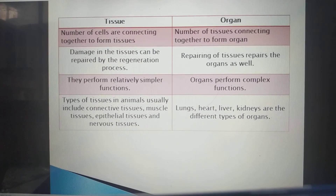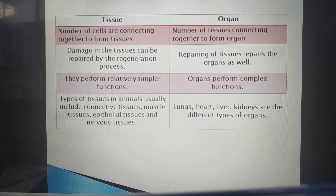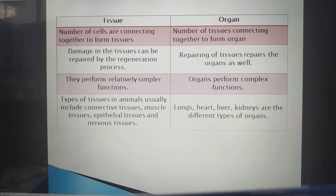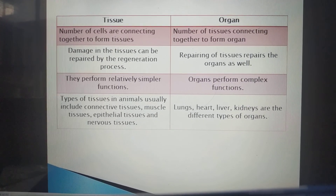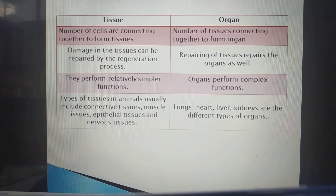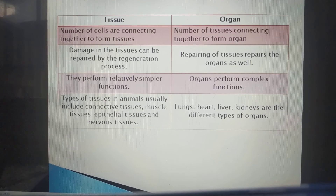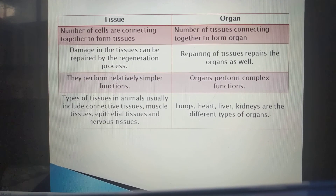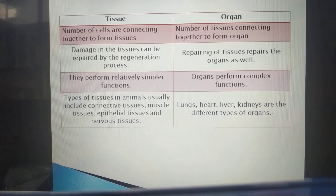Tissues perform relatively simpler functions compared to organs, which perform complex functions. Types of tissues in animals include connective tissues, muscle tissues, epithelial tissues, and nervous tissues. Organs such as lungs, heart, and kidney are different types of organs present in our body.